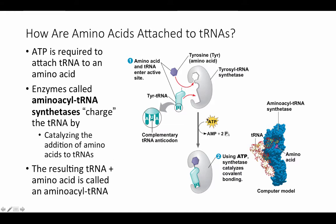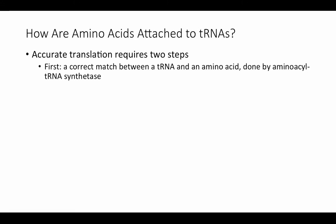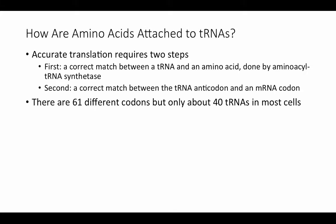Accurate translation requires two steps. First, a correct match between a transfer RNA and an amino acid — accomplished by the aminoacyl tRNA synthetase and its specificity. Second, a correct match needs to be made between the transfer RNA anticodon and an mRNA codon. There are 61 different codons, but only about 40 transfer RNAs in most cells.